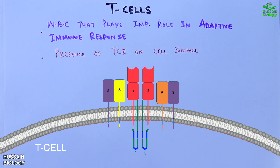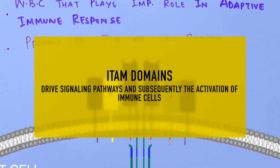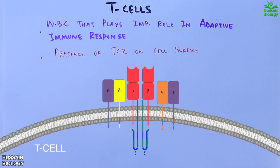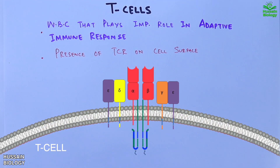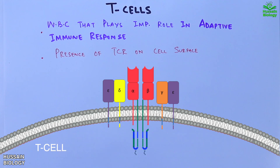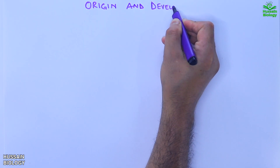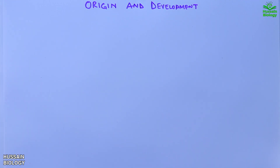The CD3 molecules include CD3 gamma, CD3 delta, and CD3 epsilon. The intracellular domains of CD3 molecules and the zeta chain have ITAM domains. Phosphorylation of ITAM domains on CD3 renders the CD3 chain capable of binding an enzyme called ZAP-70, the zeta-associated protein, which is a kinase important in the signaling cascade of the T cell.